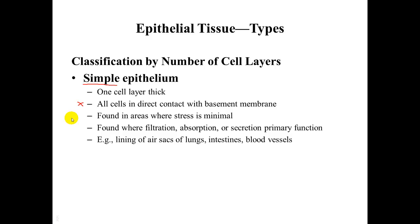Simple epithelial is found in areas where there is very little stress applied. It is used primarily for filtration, absorption, or secretion. Examples include the lining of the air sacs of the lungs (called alveoli), the intestines, and blood vessels.